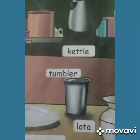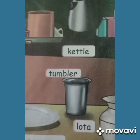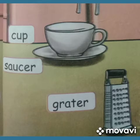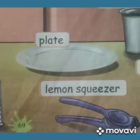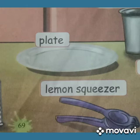Kettle — K-E-T-T-L-E. Tumbler — T-U-M-B-L-E-R. Lota — L-O-T-A. Cup — C-U-P. Saucer — S-A-U-C-E-R. Grater — G-R-A-T-E-R. Plate — P-L-A-T-E. Lemon squeezer — L-E-M-O-N S-Q-U-E-E-Z-E-R.